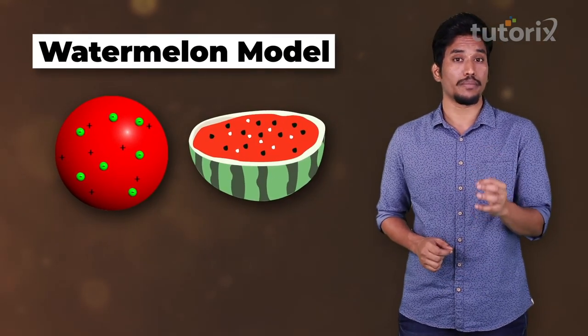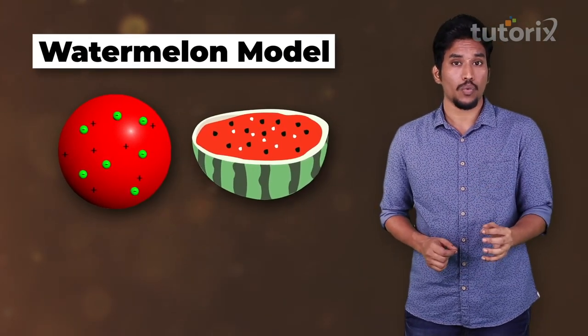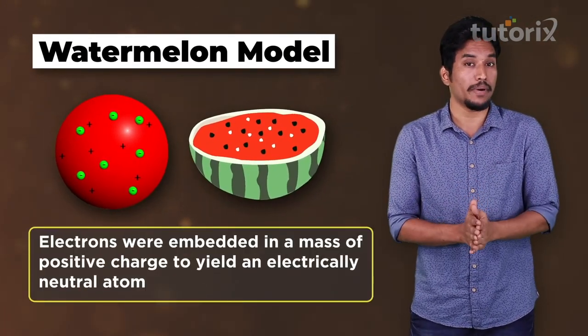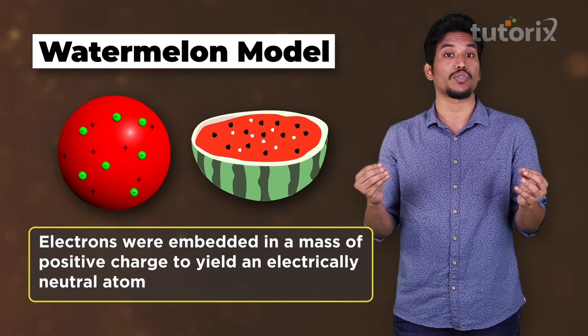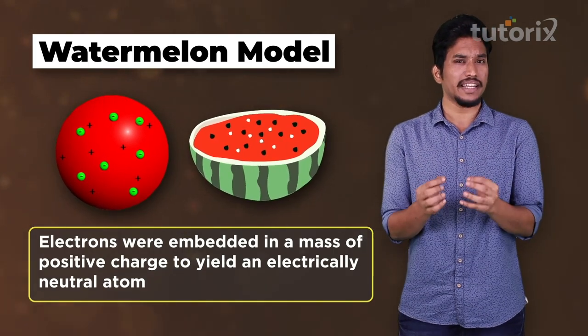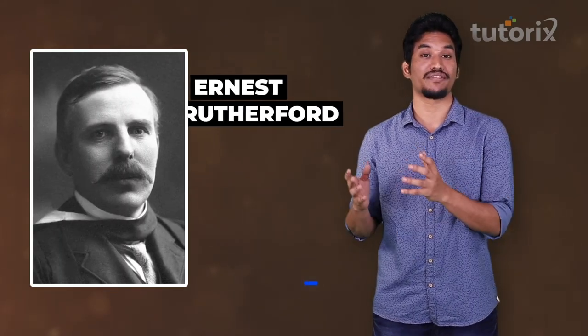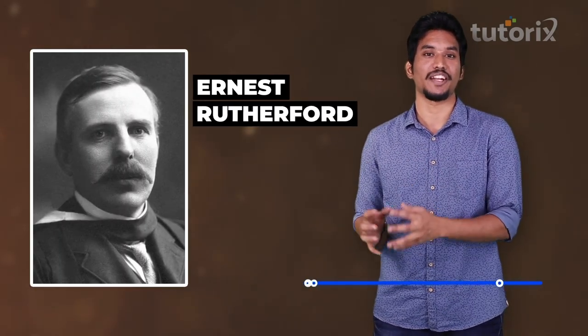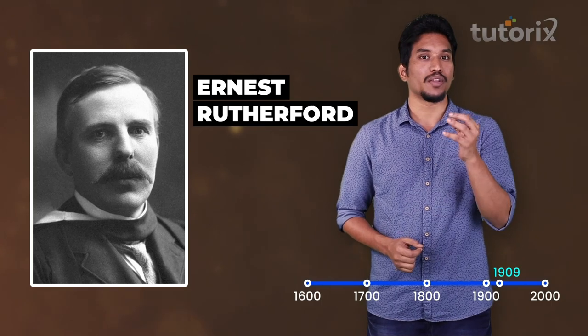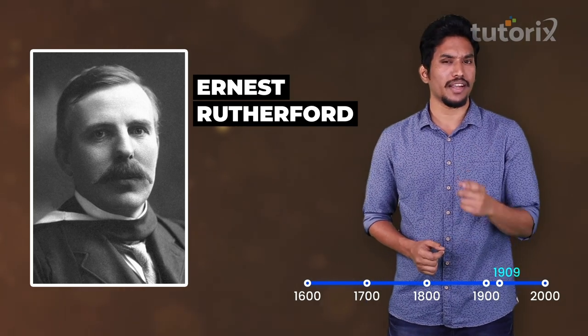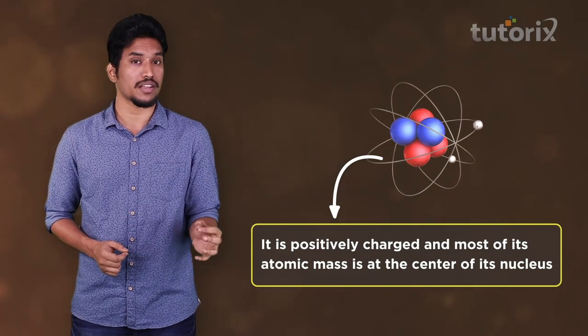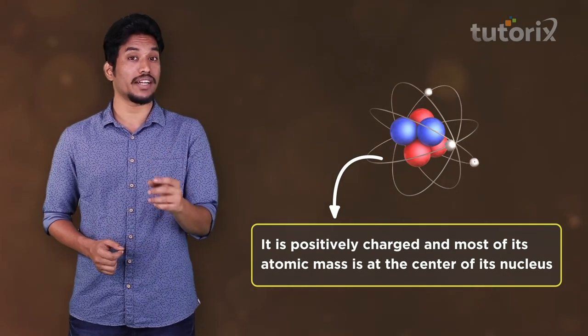In Thomson's watermelon model, he said that the electron was embedded in a mass of positive charge, yielding a neutral atom. Then came Ernest Rutherford, who was one of Thomson's students. He disproved the watermelon model in 1909 by finding out that the positive charge of an atom and most of its mass is located at the center, or nucleus.